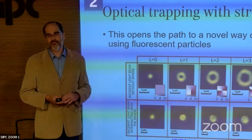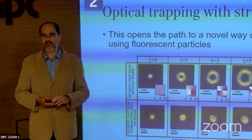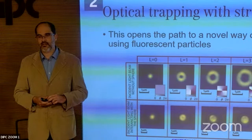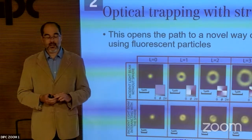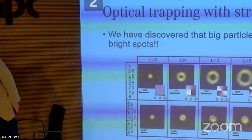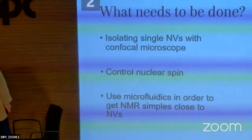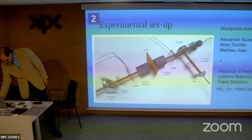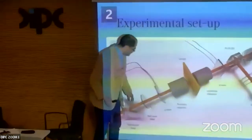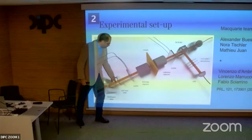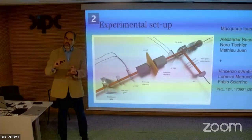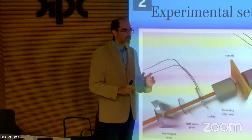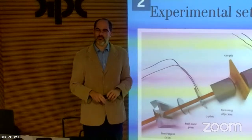Question about the nano-hole experiment: how do you control whether you produce a singlet or triplet entangled state? The two photons go together, and a half-wave plate changes the state of both photons simultaneously. Depending on the orientation of the half-wave plate, you change the relative phase between the two possibilities.